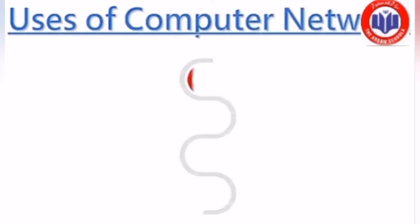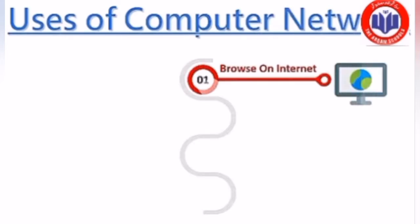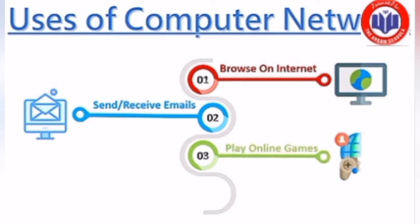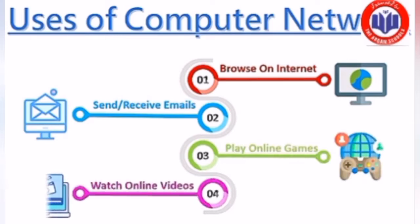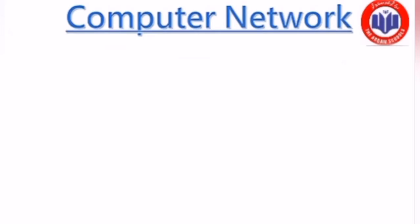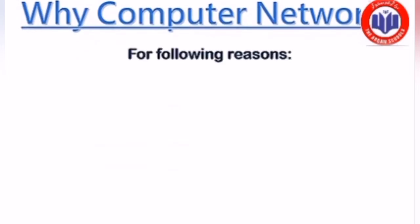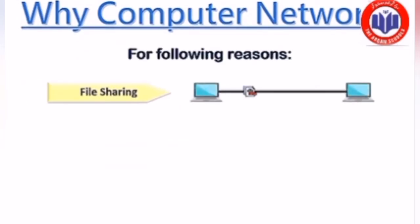Next, uses of computer network — computer network ko kyun use kiya jaata hai. First of all, internet ko use karne ke liye. Number 2, file ya email ko send/receive karne ke liye. Number 3, online games khelne ke liye. Watch online videos jo aap YouTube par dekhte ho, woh bhi hum network ke through hi dekhte hain. Example, computers ek doosre ke saath interconnected hote hain by using computer network.